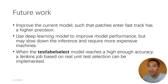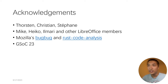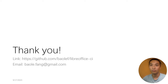Third, when the Test Label Select model achieves high enough accuracy, a Jenkins job based on real unit test selection can be implemented, which was the original goal of this project. Finally, I'd like to thank everyone who has been very helpful to my project and my work with LibreOffice. I'm looking forward to participating more in the future. Thank you for your attention. If you're interested in the project, you can check the project link on GitHub, and if you have any questions, you can reach me through my email.